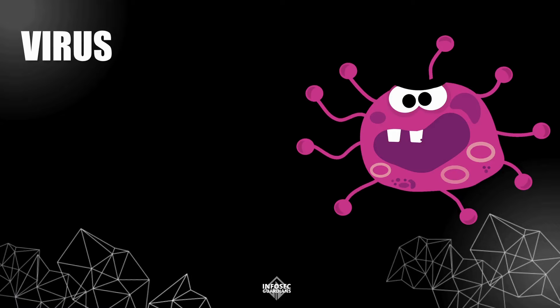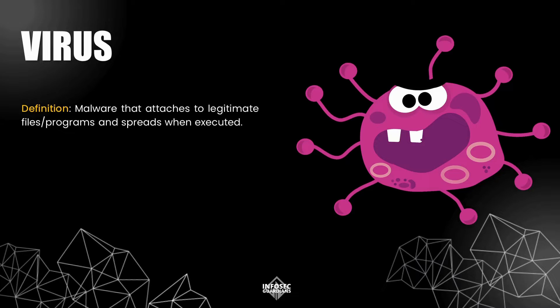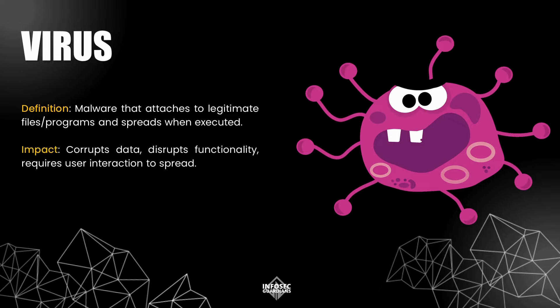First up, we have viruses. A virus is a type of malware that attaches itself to a legitimate file or program and spreads when that file or program is executed. The key characteristic of a virus is that it requires user interaction to spread — it doesn't move on its own. The impact of a virus can range from corrupting data to disrupting system functionality. Viruses can be particularly dangerous because they often go undetected until significant damage has been done.